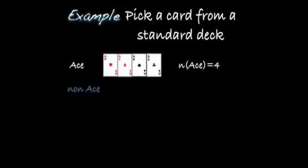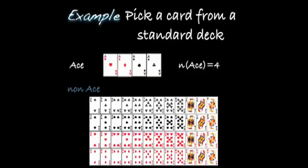When you pick a card from a standard deck, the event of picking an ace has 4 aces. The complement of an ace is a non-ace — all the cards that are not aces, meaning all aces are removed. So if there are 52 cards in the deck, 4 of which are aces, that means there are 48 non-aces.